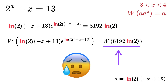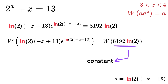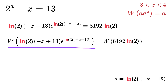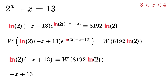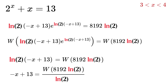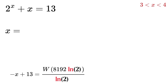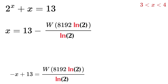Don't get scared by this expression — this value is simply a constant number, and therefore the W of this number is also a constant. So the whole left side becomes log 2 multiplied by minus x plus 13. Thus, minus x plus 13 equals W of this number divided by log 2, and so x equals 13 minus W of this number divided by log 2.